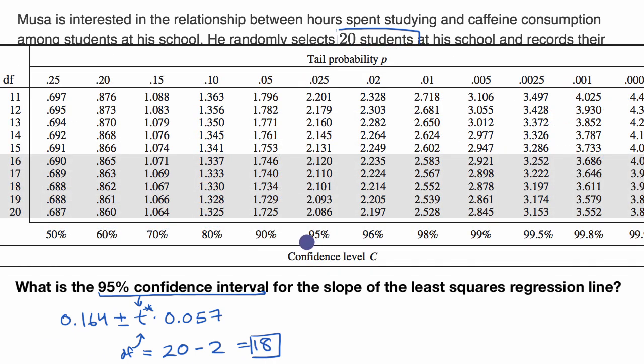So we care about a 95% confidence level. That's equivalent to having a 2.5% tail on either side. And our degrees of freedom is 18. So our critical t-value is 2.101.